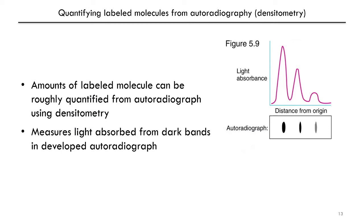An autoradiograph produced from exposing an X-ray film to radioactively labeled nucleic acid can also be used for quantification of the labeled nucleic acids. The amount of ionizing radiation that you exposed these films to results in darker spots developing, so you can quantify the amount of labeled molecules using a process called densitometry — essentially just measuring how dark the spots are on your autoradiograph.